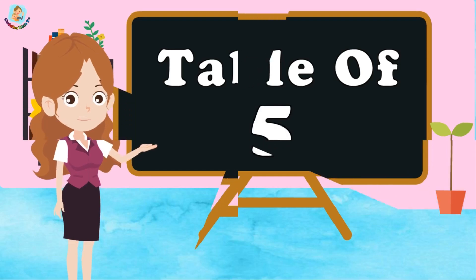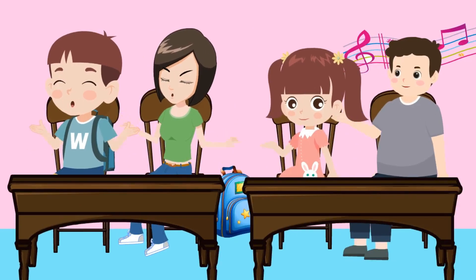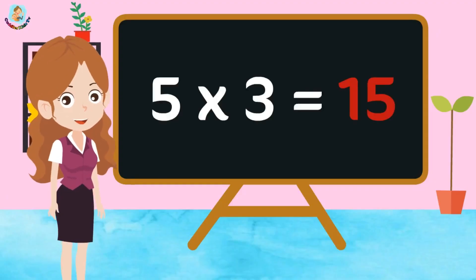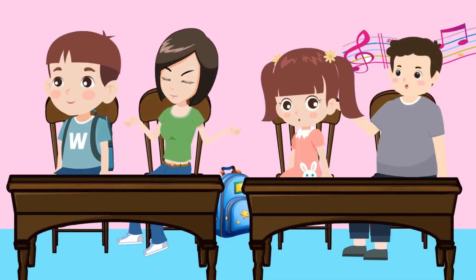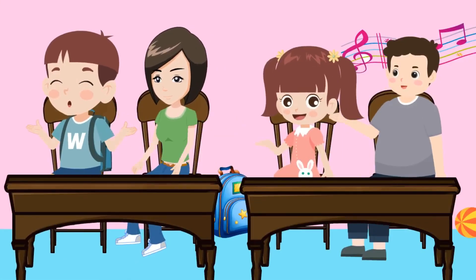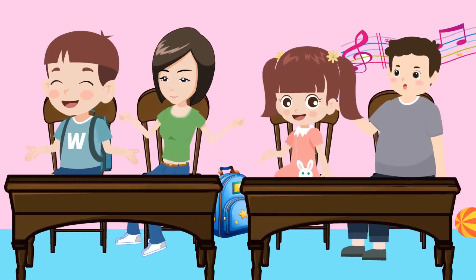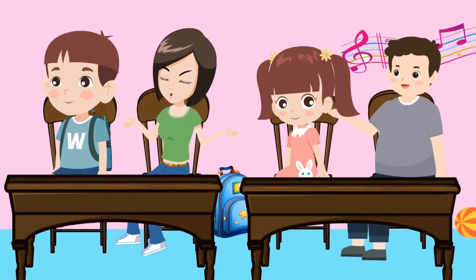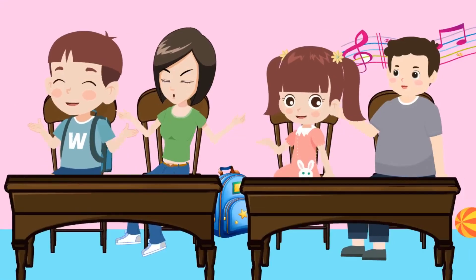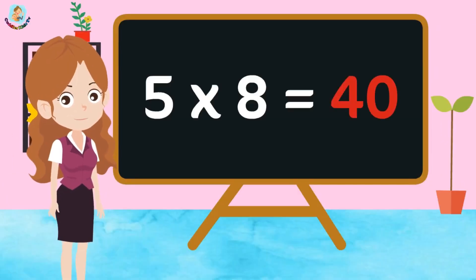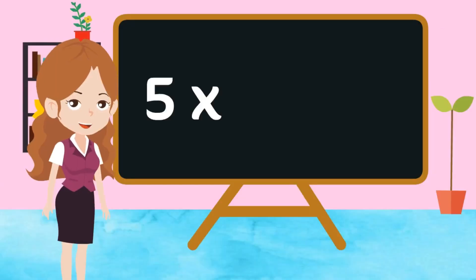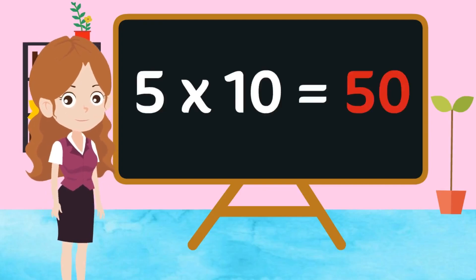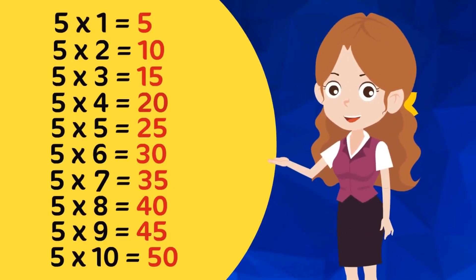Table of 5. 5 1s are 5, 5 2s are 10, 5 3s are 15, 5 4s are 20, 5 5s are 25, 5 6s are 30, 5 7s are 35, 5 8s are 40, 5 9s are 45, 5 10s are 50. Now let's speak together.